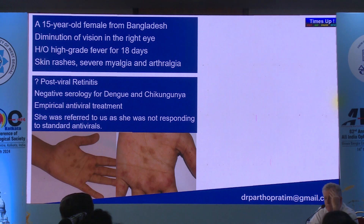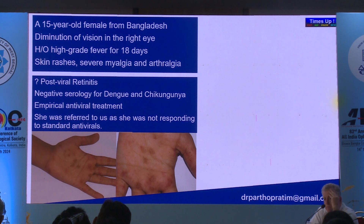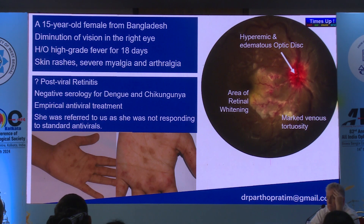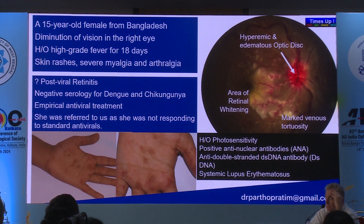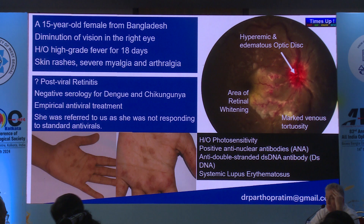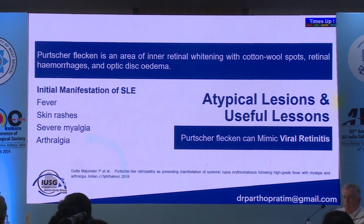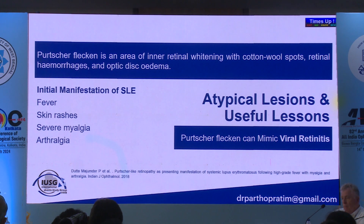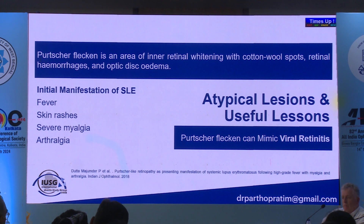Another case: a girl referred from Bangladesh with a diagnosis of post-viral retinitis with rash, myalgia, and joint pain. Fundus showed an area of retinal whitening, marked venous tortuosity, and a hyperemic disc. The only additional clue was a history of photosensitivity. Subsequent investigation was positive for ANA, and it turned out to be systemic lupus erythematosus. We were actually dealing with Purtscher's flecken secondary to SLE — which can mimic viral retinitis.